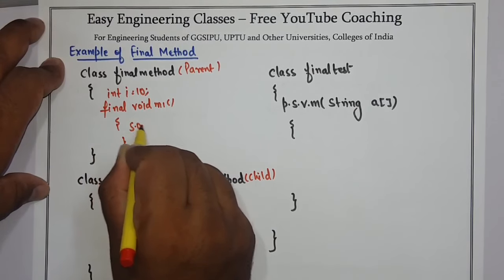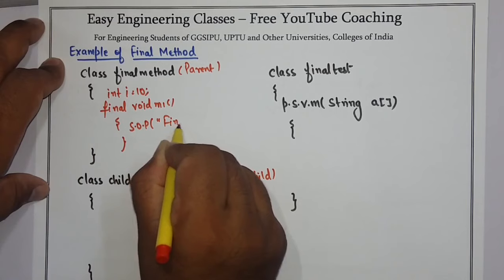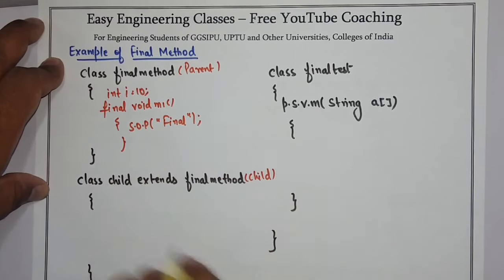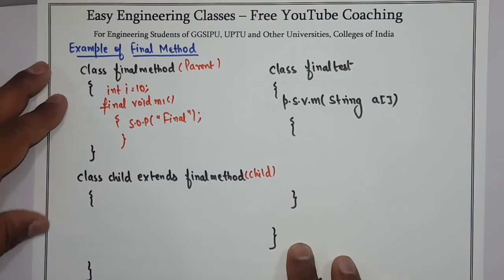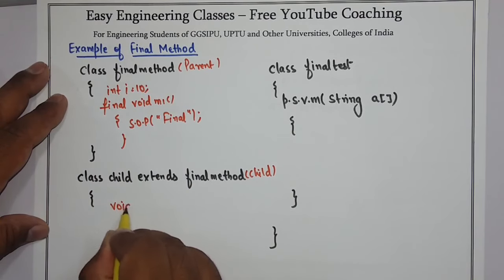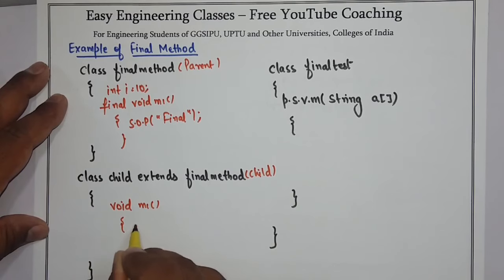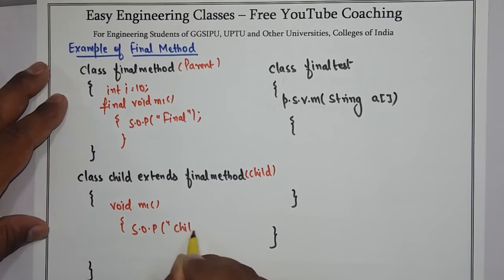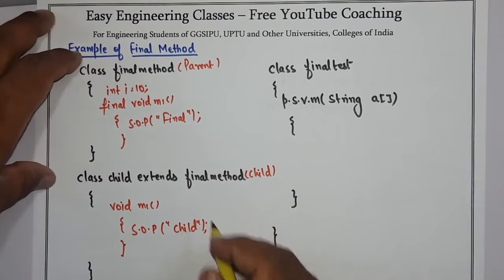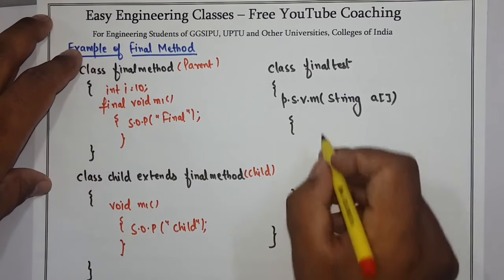...m1 with System.out.println("final"). Similarly, if inside the child class I also try to define a method with the same name m1, then you cannot compile this program because you cannot override a method which is declared as final.